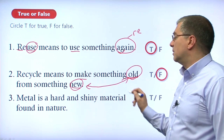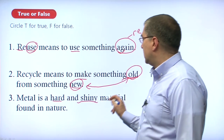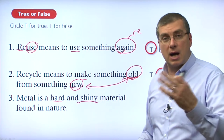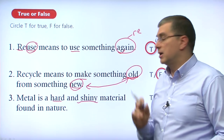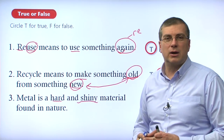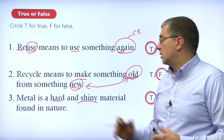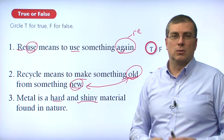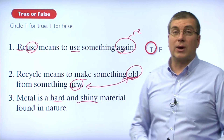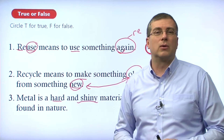Some metal isn't always shiny — like iron. We need to change iron to make steel, which is a hard and shiny metal. But we do find those ores in nature; we get those metals from the ground. Okay, that wraps it up for the vocabulary section. Let's take a short break. We'll come back and go over the reading section together. So don't go away.